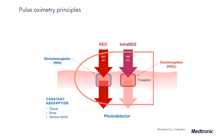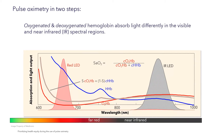We can see in more detail here how oxygenated and deoxygenated hemoglobin absorb light differently in the visible and near-infrared spectral regions. On the left of the diagram is the spectrum of red LED light, and we can see that that light is preferentially absorbed by deoxygenated hemoglobin, represented by the blue line. On the right side, we see the infrared LED spectrum, which is preferentially absorbed by oxygenated hemoglobin, represented by the red line.